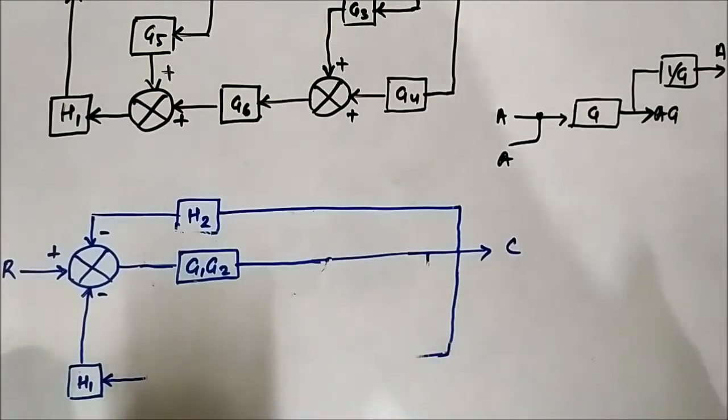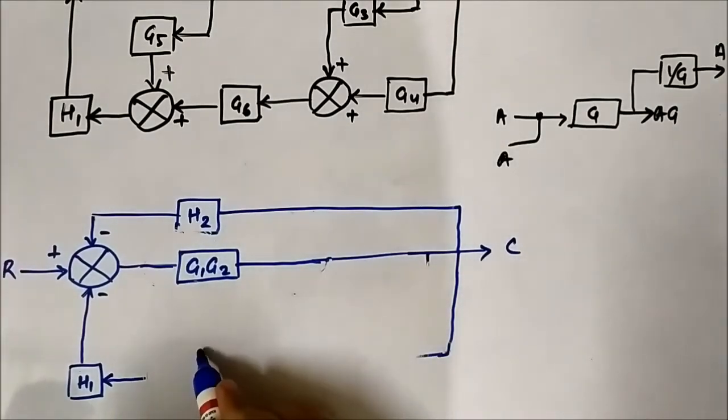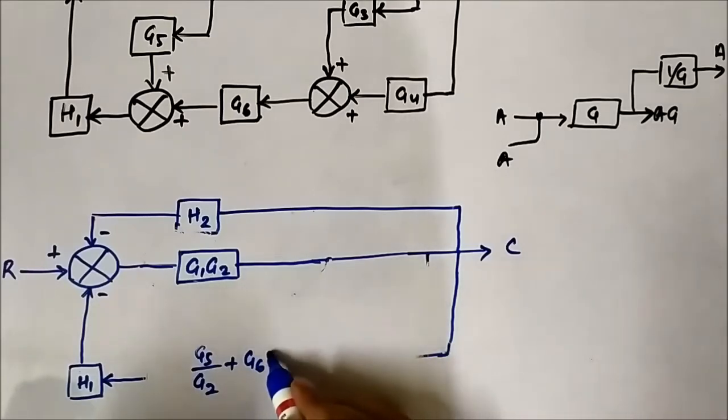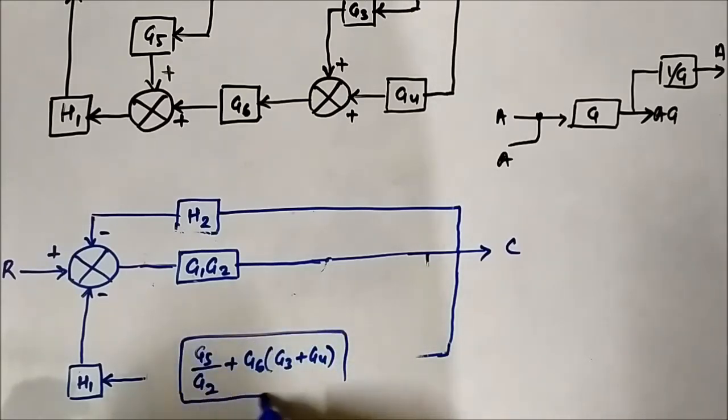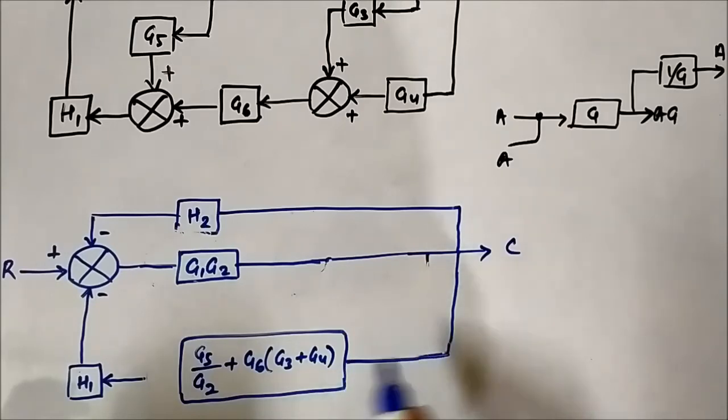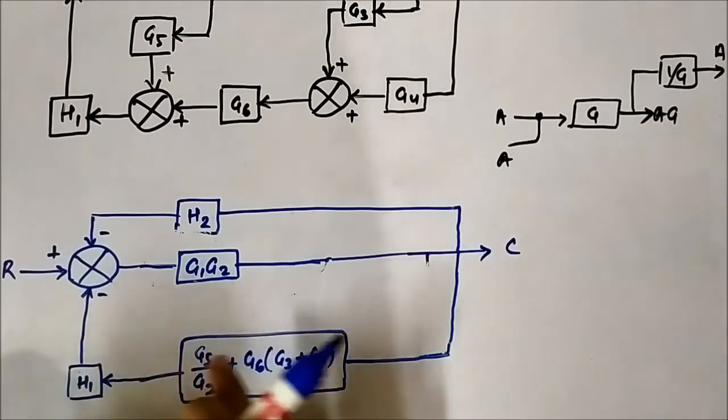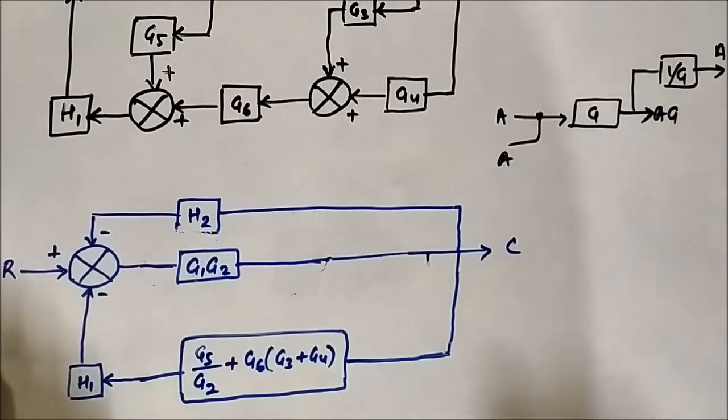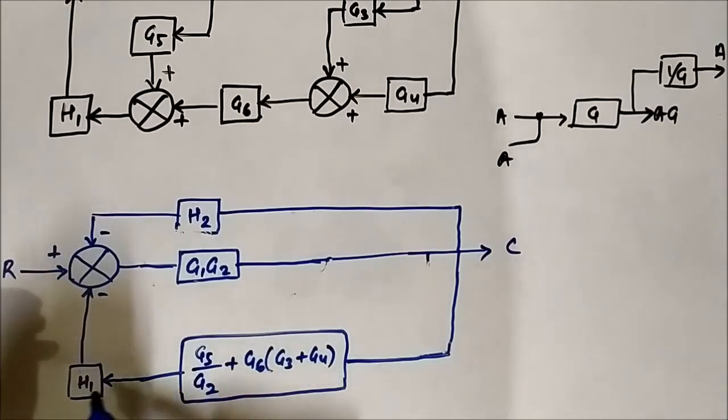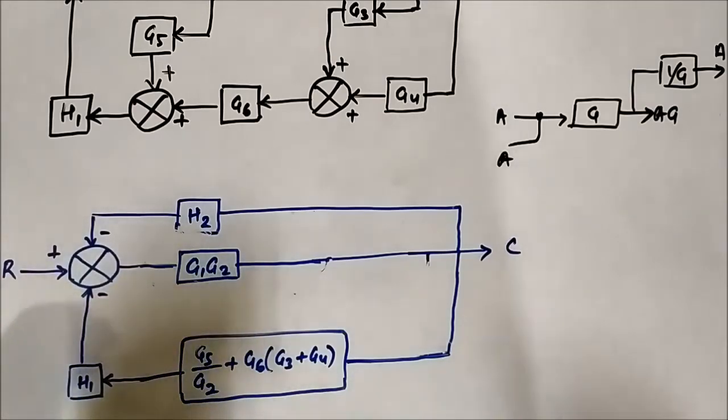See how it is getting simpler and simpler. So it is simply G5 by G2 plus G6 into G3 plus G4. And again it will get multiplied with H1. H1 will get multiplied throughout. So this will become, when H1 gets multiplied, this will become...